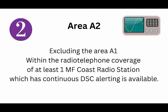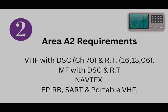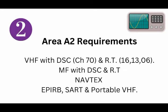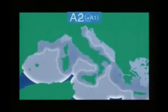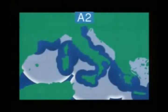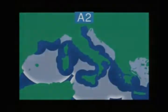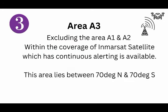Sea Area A2 is the area excluding sea area A1, but within the radio telephony coverage of at least one MF coast radio station with continuous MF DSC alerting. The range of sea area A2 varies from 50 nautical miles to 250 nautical miles. The equipment requirements for vessels in area A2 are: VHF with DSC and radio telephony, MF with DSC and radio telephony, NAVTEX with EGC receiver, EPIRB, SART, and portable VHF.